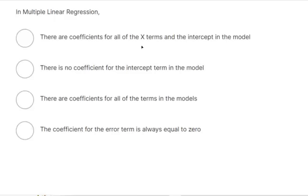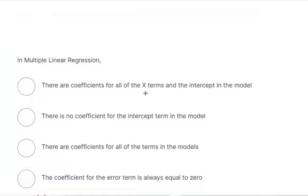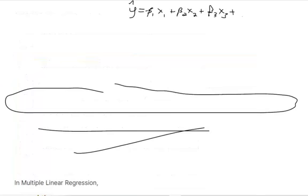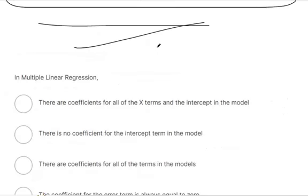Multiple linear regression, there are coefficients for all the x terms and the intercept of the model. Yep, that's what I was putting up here. Okay, these are the coefficients. And then you've got a y-intercept, a coefficient that doesn't have an x attached to it. So yes, that's true.